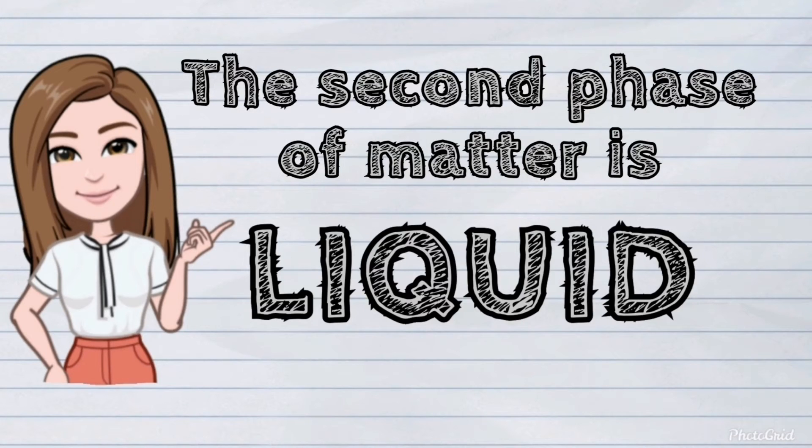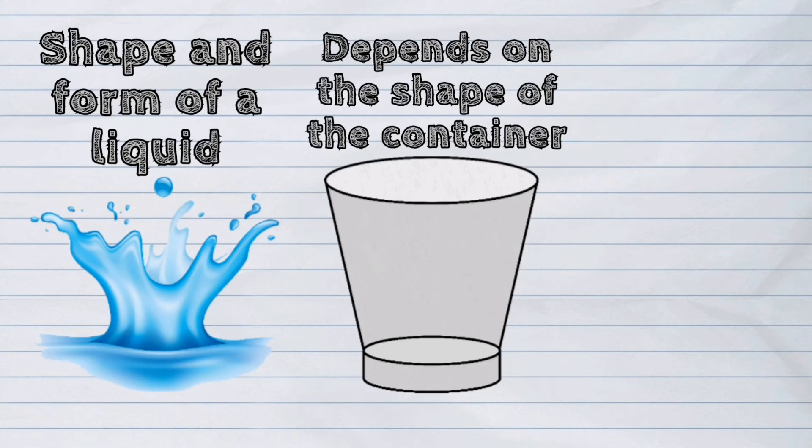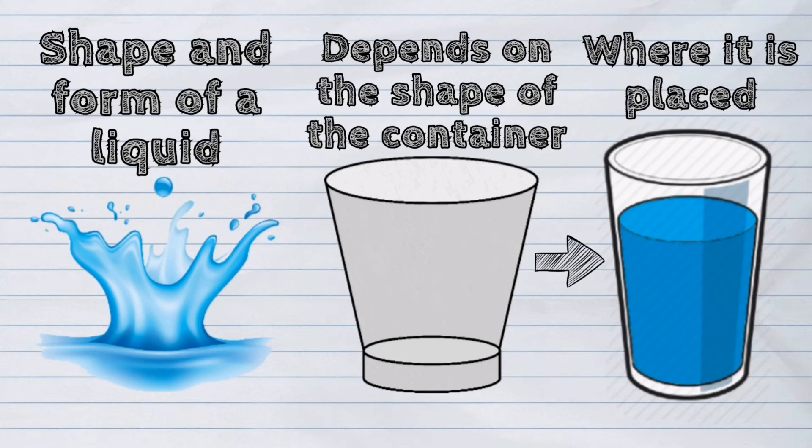A liquid is matter that has a definite volume. However, it does not have a definite shape or a definite form. The shape and form of a liquid depends on the shape of the container where it is placed.